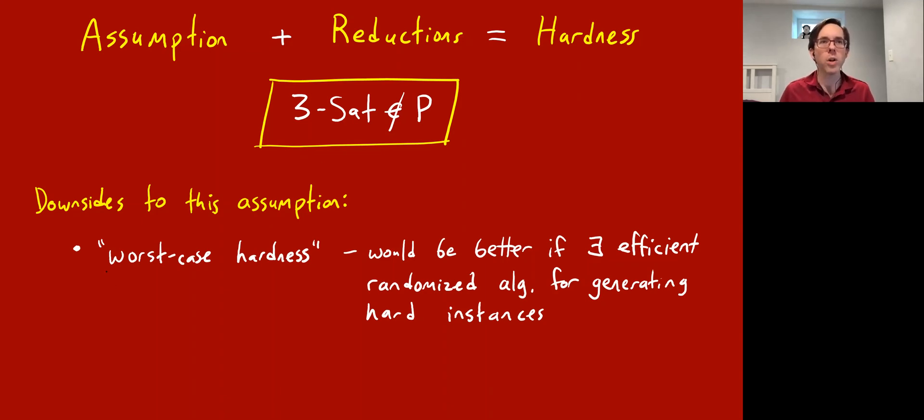One is, it's an assumption about worst-case hardness. So it basically says, for every candidate polynomial time algorithm, there's at least one instance that it gets wrong. But this is why it's called worst case - there may only be one instance or a very small number of instances that a candidate algorithm could get wrong. What would be better is if you could have large classes of instances that were hard, and in particular, if you had an efficient randomized algorithm for generating hard instances.